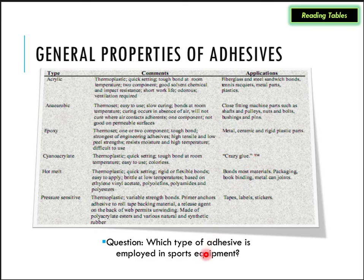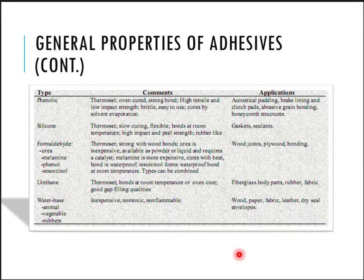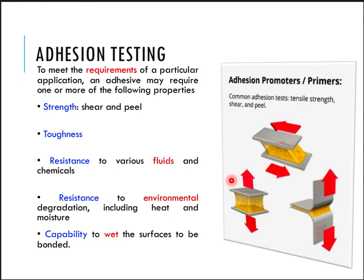This is a continuation of different types of adhesives. Adhesion testing is carried out to meet the requirements of a particular application. For applications requiring tensile or shear strength, we perform shear or peel strength tests — a shear test, a peel test, and a tensile test. Sometimes we require toughness or resistance to various fluids and chemicals, so each requirement calls for a different type of testing.